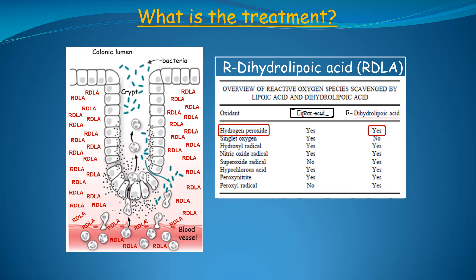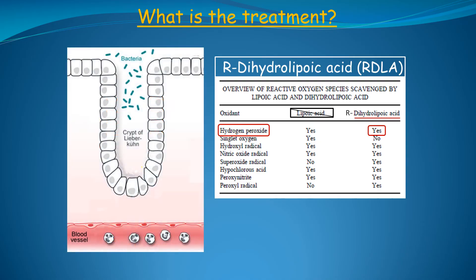Additionally, since RDLA is membrane permeable, it can enter colonic epithelial cells and neutralize excess hydrogen peroxide inside the cells. Neutralizing excess intracellular hydrogen peroxide will prevent any further inflammation, since there is no intracellular hydrogen peroxide that can diffuse out of the colonic epithelial cells to attract neutrophils into the colonic epithelium and cause relapse. This has been called maintenance of remission. Thus, the ability of RDLA to neutralize hydrogen peroxide will resolve the colonic inflammation.